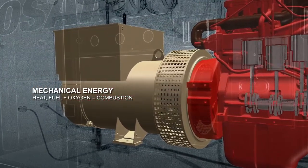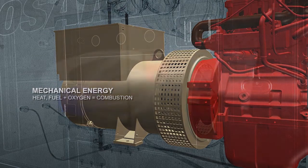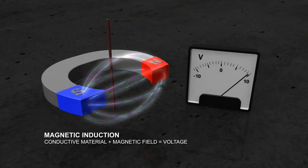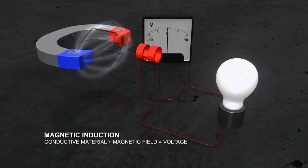An alternator converts mechanical power into electrical energy in a process called magnetic induction. Magnetic induction occurs when a conductive material such as a copper wire passes through a magnetic field and voltage is produced. If the wire is connected in a complete circuit, the power can be transmitted.